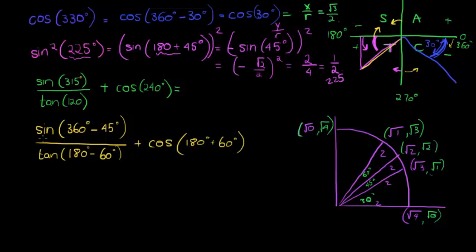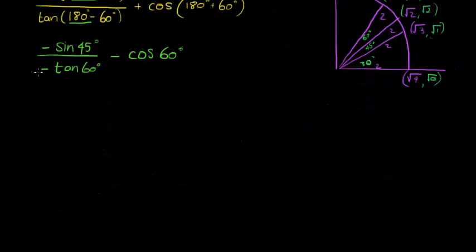Now we can use our reduction formulas. Because we know sine 360 minus is the fourth quadrant, only cos is positive in the fourth quadrant, so this must be minus sine of 45 degrees. Divided by tan in the second quadrant, where only sine is positive. 180 minus the second quadrant, sine is positive, so tan must be negative, tan of 60 degrees. And this one plus cos of 180 plus, 180 plus is third quadrant. Tan is positive in the third quadrant, meaning cos is going to be negative. So when we multiply this positive with a negative, it becomes negative cos of 60 degrees.